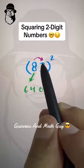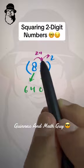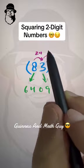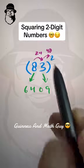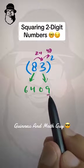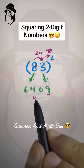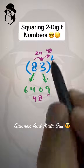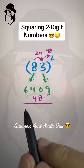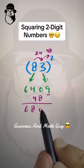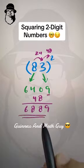8 times 3 is 24, then multiply by 2: 24 times 2 is 48. Leave one space from the right and write your answer there, then add them all up: 6, 8, 8, 9 is your answer.